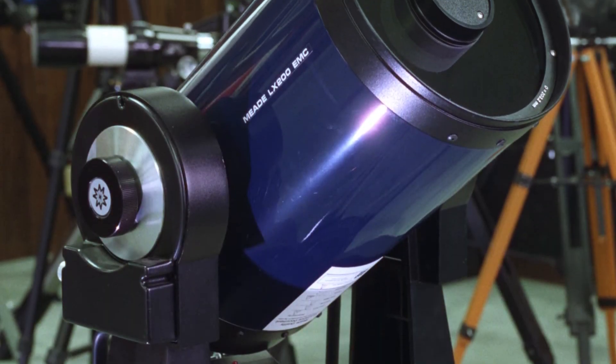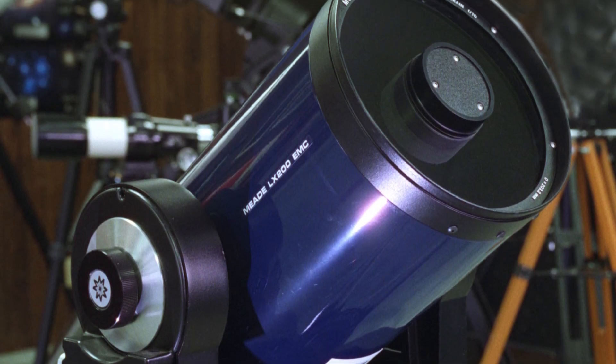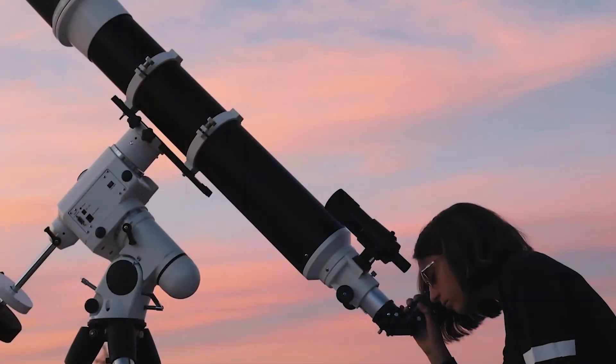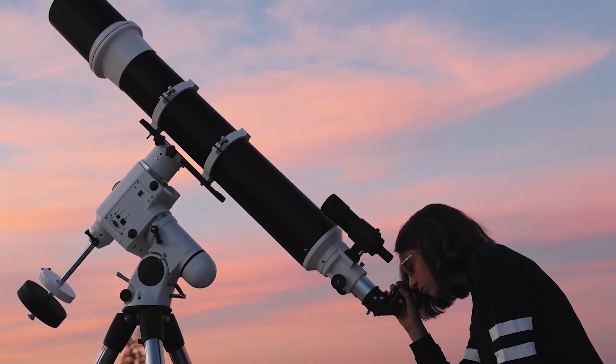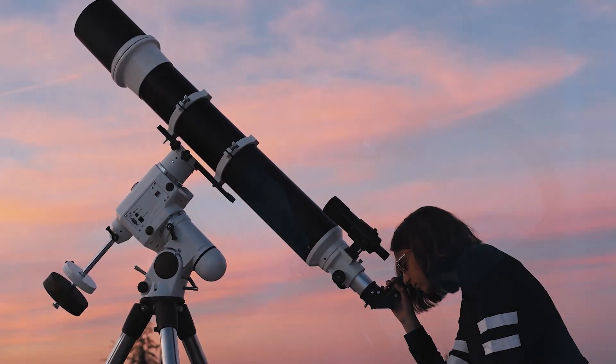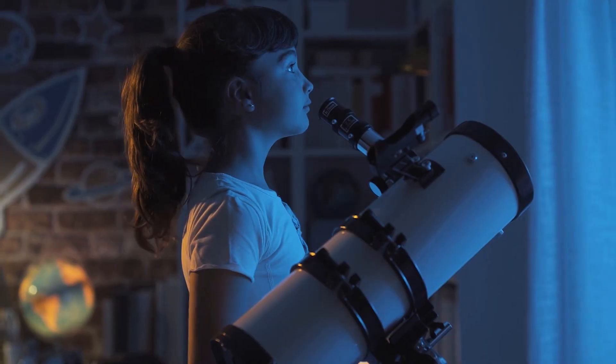Amateur astronomers use the Schmidt-Cassegrain model because it is compact and powerful. Now you know something about how telescopes work, including the differences between refracting and reflecting telescopes and combo telescopes, which are often used by amateur astronomers.